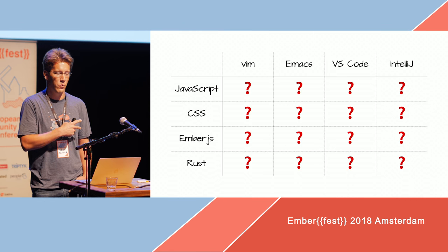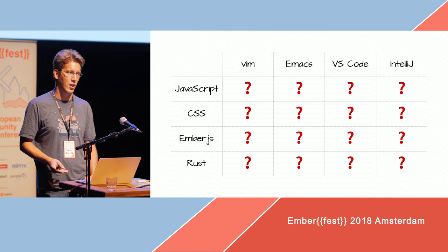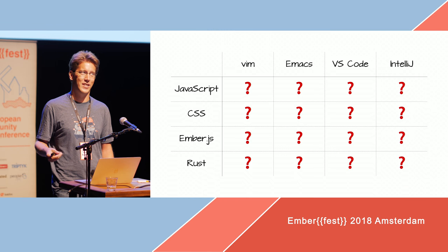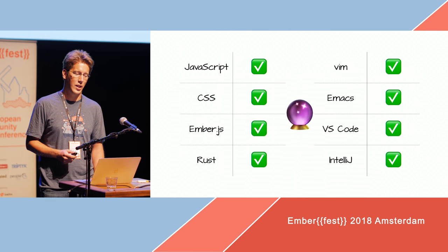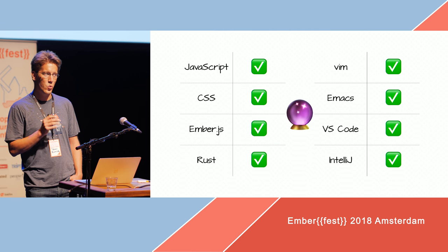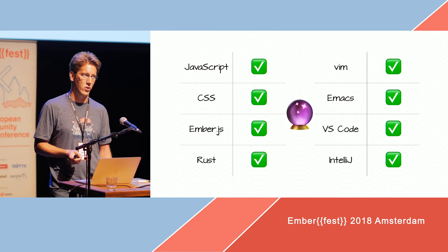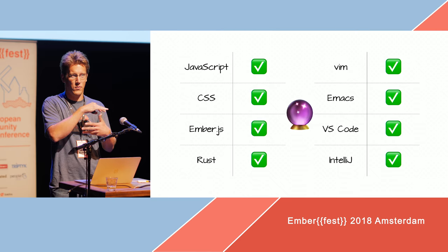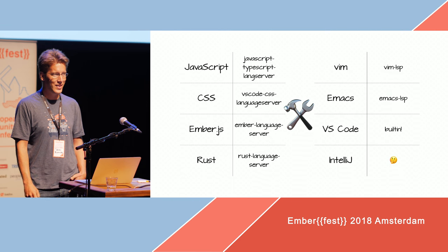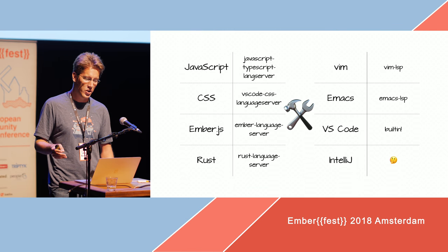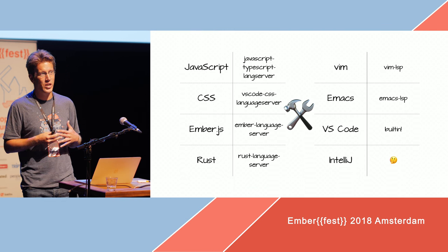You can see with just four languages or frameworks and four editors, we're already up at 16 plugins. And you can imagine that doesn't scale well. So it would be pretty awesome if we could just write one plugin per language or framework and one plugin per editor, and they would all work together in some way. The good thing is that's not magic — it's just engineering. We need a common protocol so that they can work together.